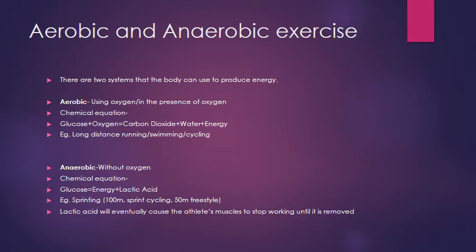Aerobic and anaerobic energy. The body has two systems to produce energy. The aerobic system uses oxygen to produce energy. The chemical equation is: glucose + oxygen → carbon dioxide + water + energy. We use glucose from carbohydrates in the presence of oxygen; we breathe out the carbon dioxide, produce water as sweat, and get energy. Examples of aerobic exercise include long-distance running, swimming, or cycling.